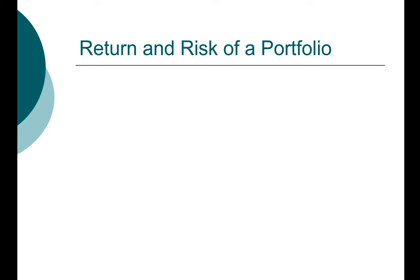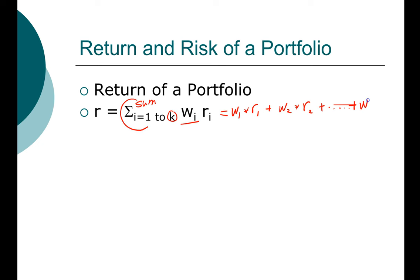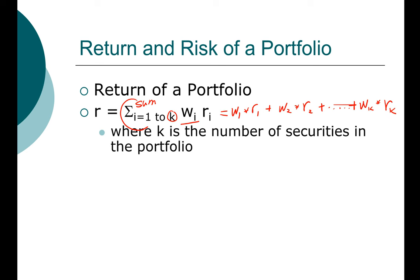The expected return or the realized return of a portfolio is relatively straightforward — it's simply the weighted average of the underlying securities. The return of a portfolio is the sum of the weighted averages, where W represents the weight. The Greek letter sigma stands for sum. So the return on a portfolio, whether it's the realized return or the expected return, equals the weighted average of the underlying stocks: the weight for the first stock times its return, plus the weight on the second stock times its return, and so on for all K stocks.